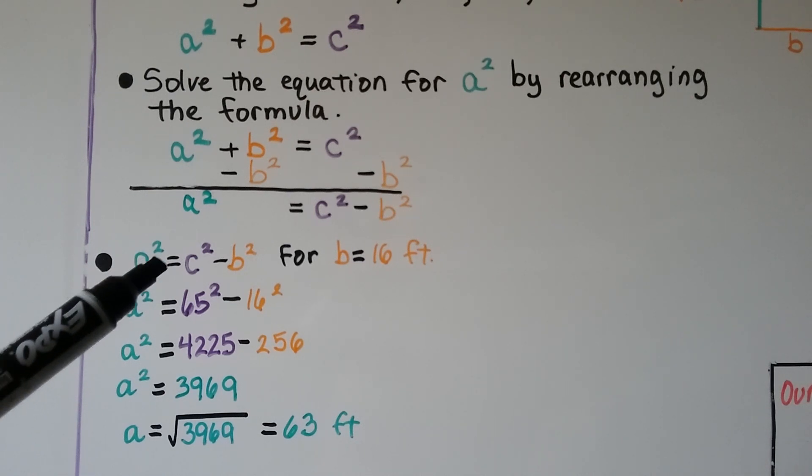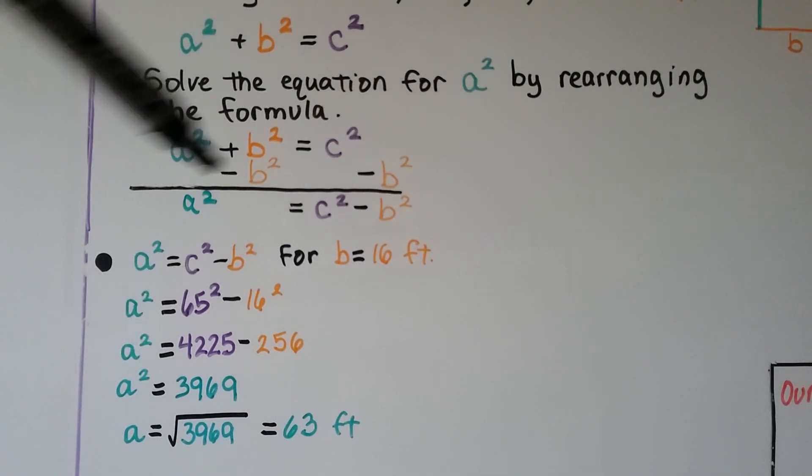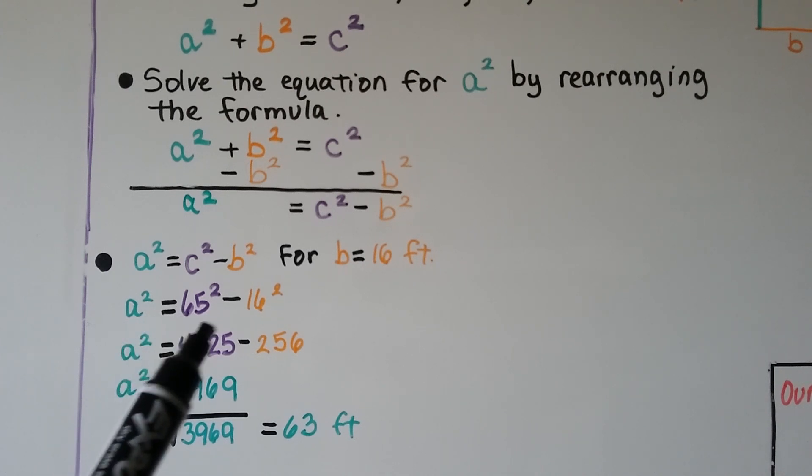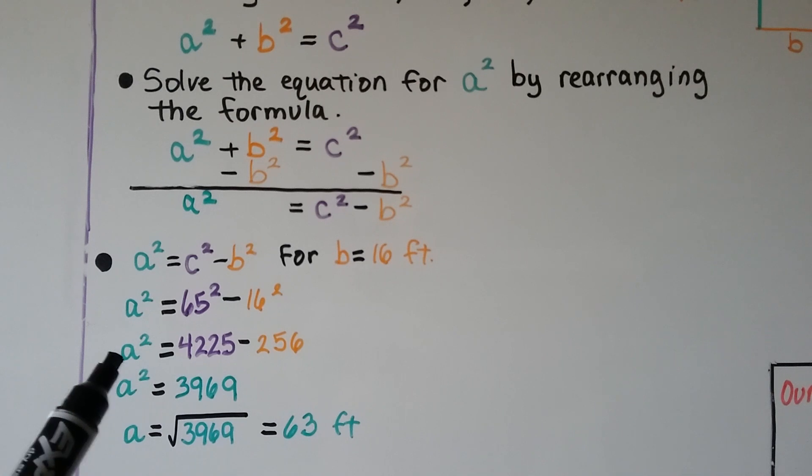We have a squared equals c squared minus b squared. For b is 16 feet, we put in our values. C squared would be 65 squared minus 16 squared. That would be 4,225 minus 256, which gives us 3,969. We remove the exponent by putting a radical sign around this side of the equal sign, and we get 63 feet.